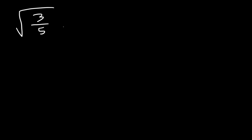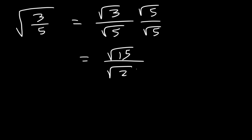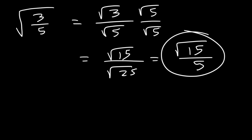Let's say if we have this example: the square root of 3 over 5. Go ahead and rationalize the denominator. We can rewrite this as root 3 over root 5, so we need to multiply the top and the bottom by root 5. Whatever you do to the bottom, you must also do to the top. 3 times 5 is 15, 5 times 5 is 25, and the square root of 25 is 5.